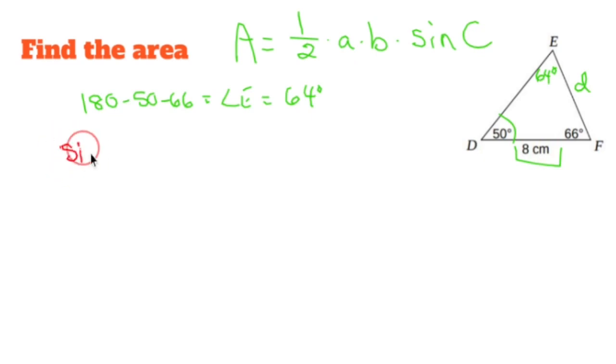The law of sines says the sine of some angle over its opposite side is going to equal the sine of some angle over its opposite side. So I use 64 and 8. I use 50 and I don't know. Whenever you have a fraction equaling a fraction, you crisscross applesauce called proportions.